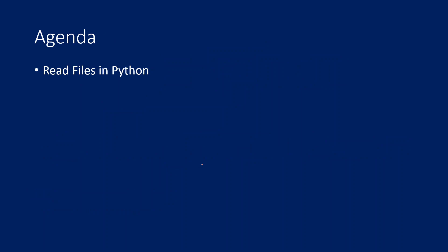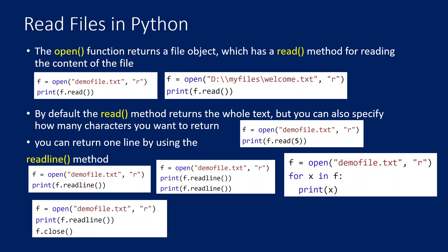Please watch my previous video where I have explained what is file handling in Python. In this video, we are going to use the same open function discussed in the previous video, and then read the content of the file. There is a useful function called open that will allow you to create a file object, and using that file object you can perform reading, writing, or appending data to the file.